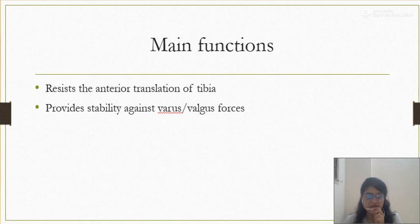What are the main functions of the ACL? There are two main functions. The primary function is it resists the anterior translation of the tibia, and the secondary function is it provides stability against valgus or varus forces.